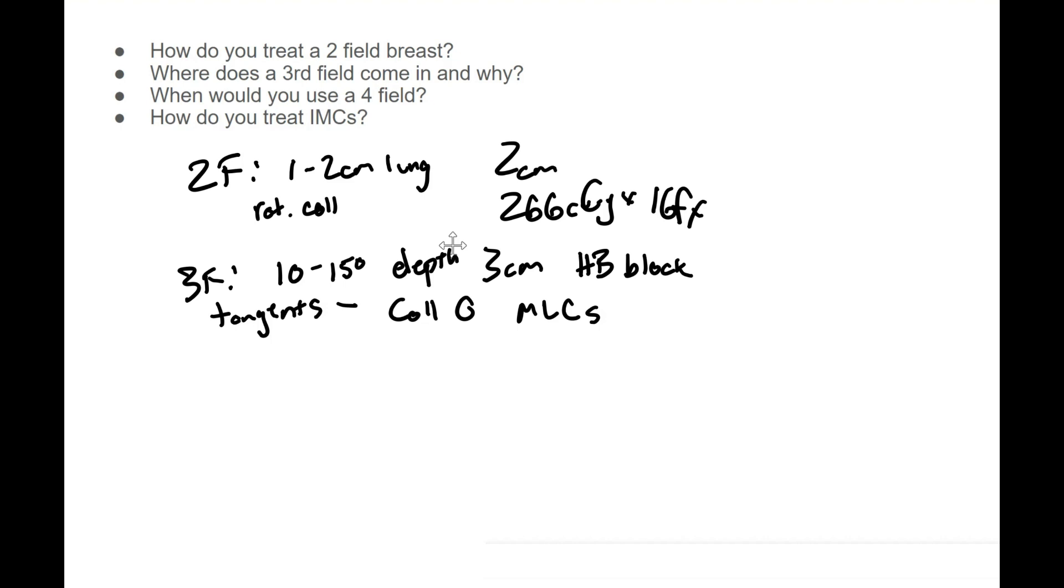So where we have a tangent you kick that collimator and you rotate it to match the actual field size, match the chest wall. Now we aren't doing that - we're using a collimator of zero, you're using the MLCs to block the beam to match the chest wall curvature. You can also if you wanted add a couch kick, and that's going to help match the superior field edge with the match line between the tangents and the supraclavicular field.